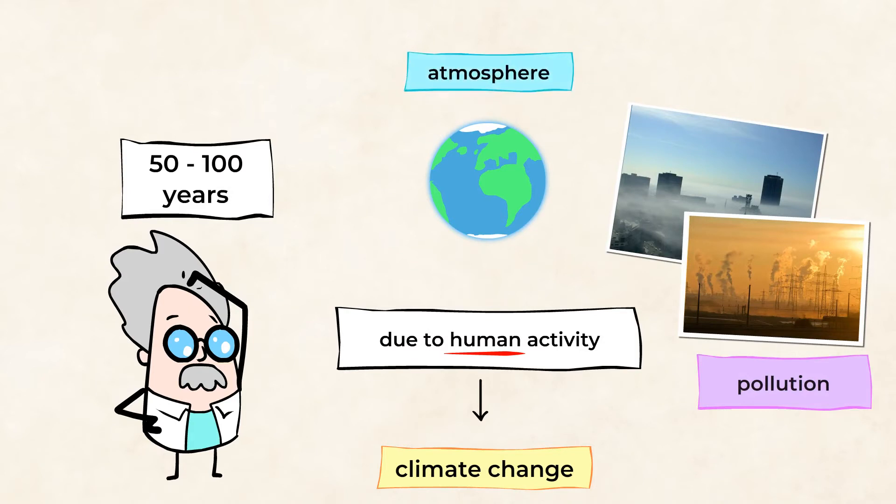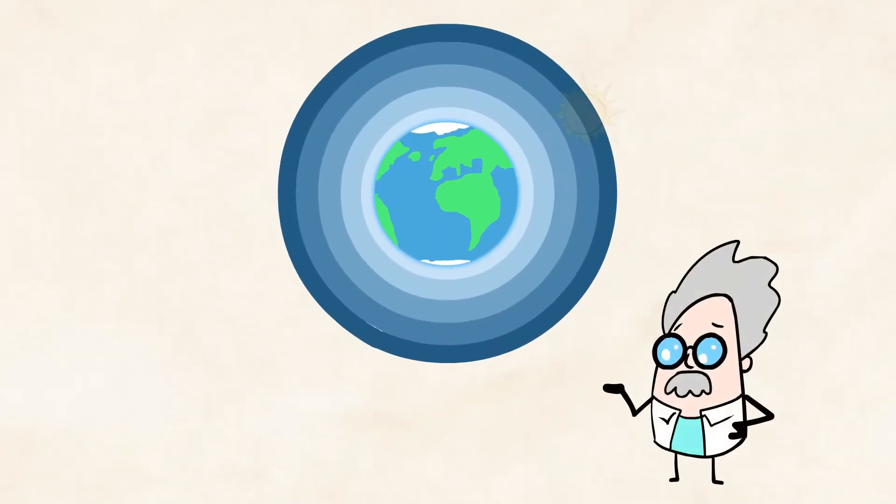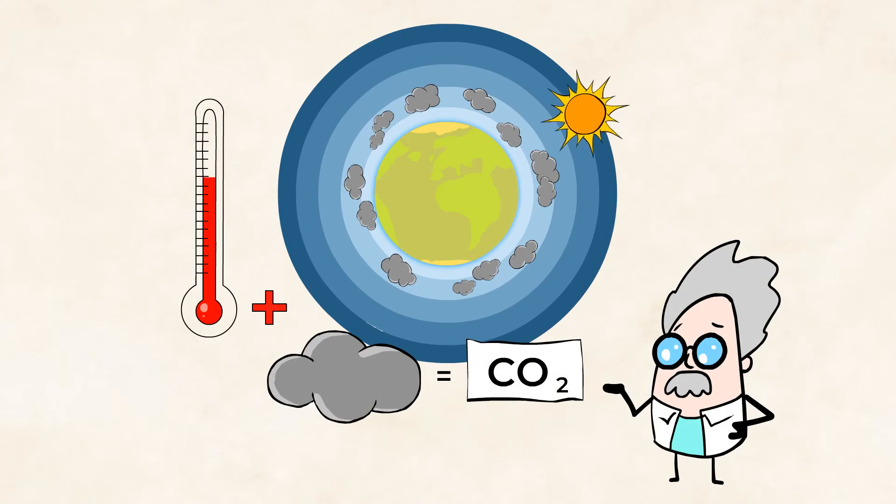Our atmosphere is really important. You can think of it as a blanket of gases which surrounds our planet. When certain heat-trapping gases, such as CO2, get released in the atmosphere, it causes a warming in our planet. So the more of these gases,